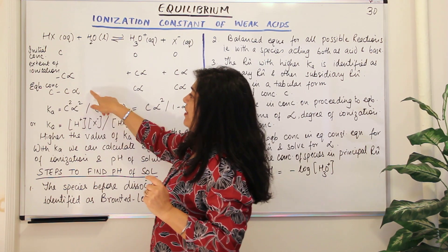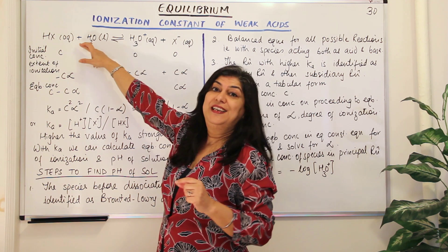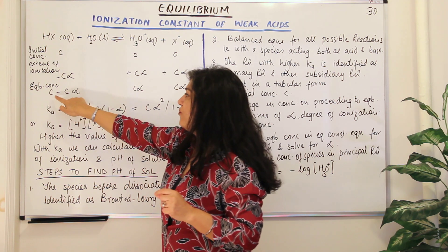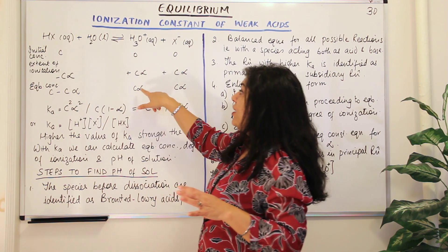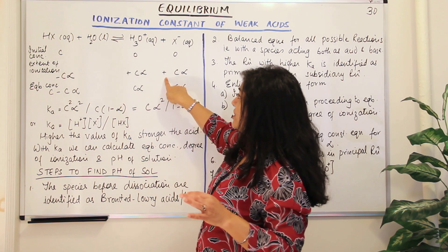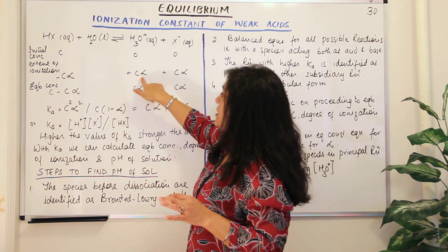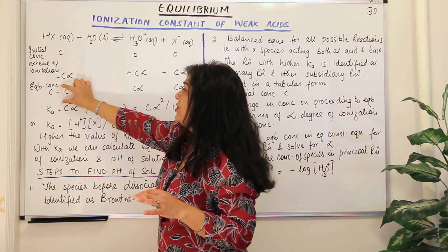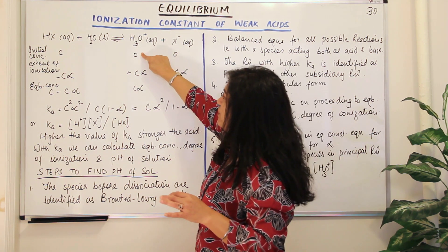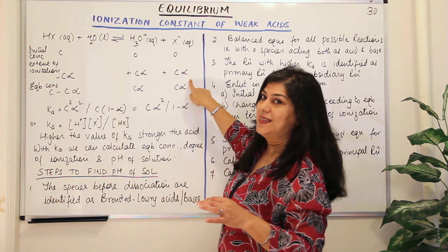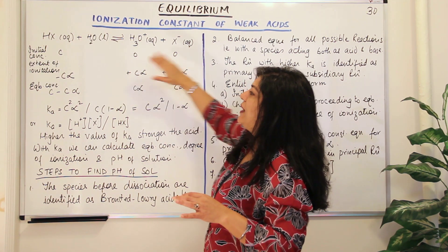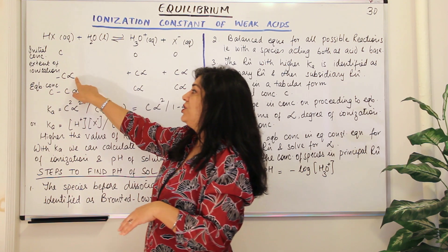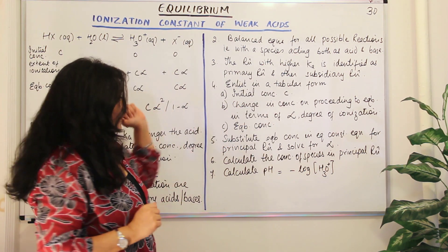To write equilibrium concentrations, subtract the change from initial: the acid's equilibrium concentration is C minus C×alpha. For the products, their initial concentration was zero and C×alpha was formed, so you add: zero plus C×alpha equals C×alpha for both H3O+ and X−. This gives all equilibrium concentrations in terms of the degree of dissociation alpha.